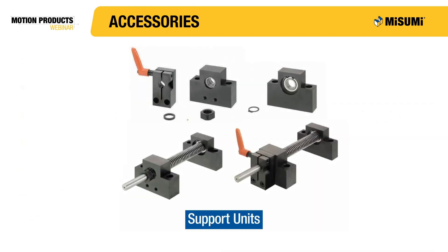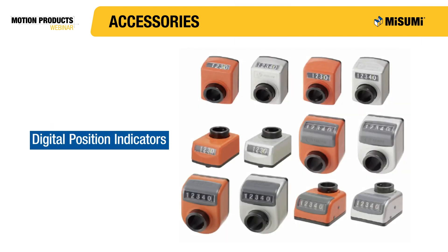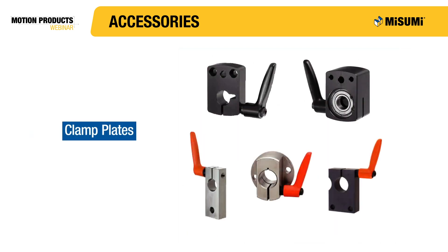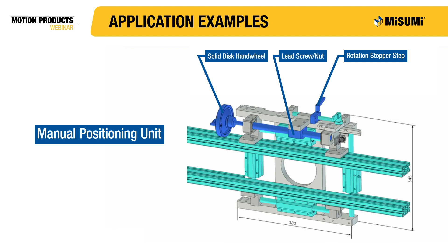Misumi also carries accessories that can be used with the lead screws. For example, Misumi carries support units — bearings with housings that allow the lead screws to be mounted. Misumi also carries brackets for nuts, which change the mounting surface direction from parallel with the shaft to perpendicular to the shaft. Also available are digital position indicators, which count the revolutions of the shaft and display the distance traveled by the nut in millimeters. Finally, Misumi carries clamp plates that bolt directly to the support units or the position indicators, clamping down on the screw shaft to prevent it from rotating.